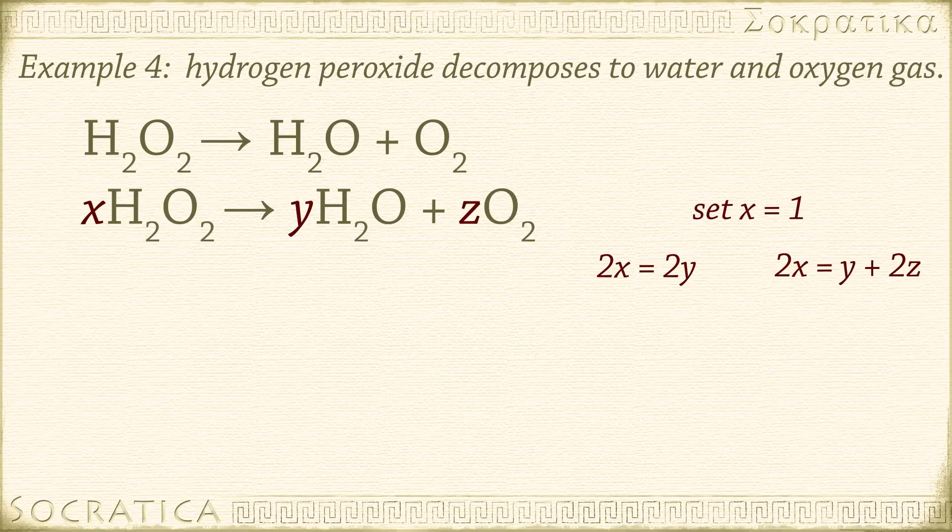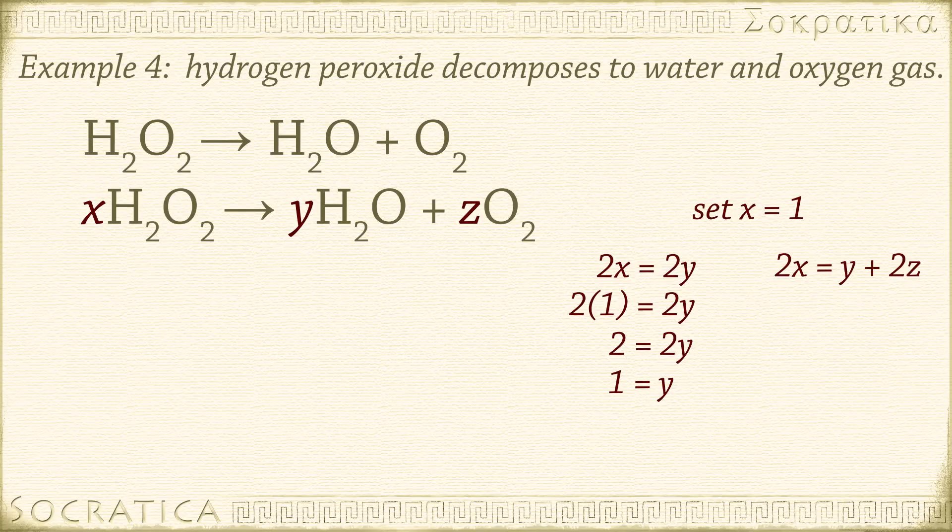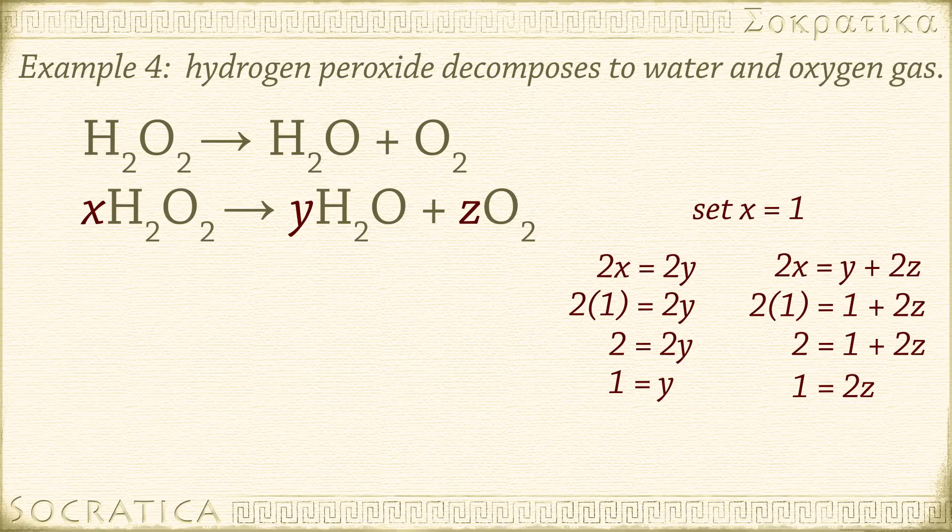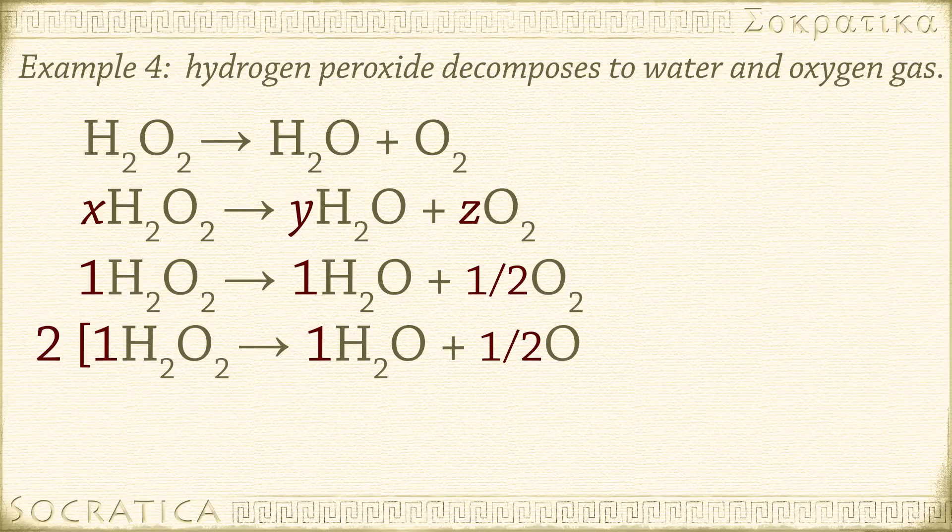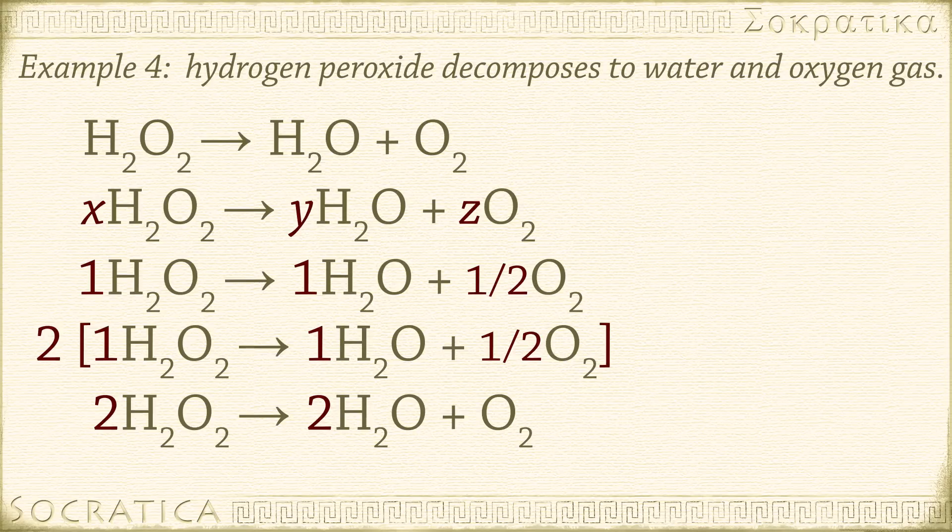Let's set X equal to 1. 2 times 1 equals 2Y. 2 equals 2Y. Y equals 1. And in the second equation, 2 times 1 equals 1 plus 2Z. We can solve for Z. 2 equals 1 plus 2Z. 1 equals 2Z. Z equals 1 half. Put in these values for the coefficients. 1H2O2 yields 1H2O plus 1 half O2. Multiply everything by 2 to get rid of that fraction. 2 times the quantity 1H2O2 yields 1H2O plus 1 half O2 gives us 2H2O2 yields 2H2O plus O2. Check the number of atoms on both sides. 4H and 4O on the left, 4H and 4O on the right. That's balanced.